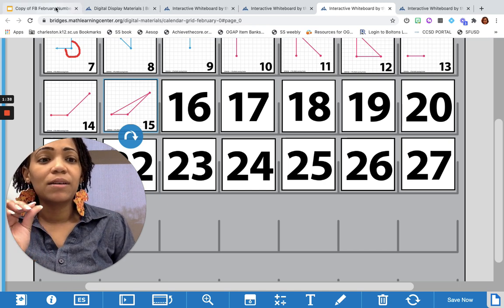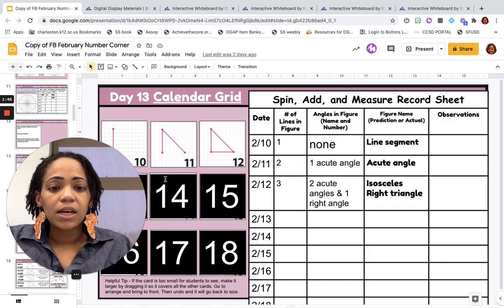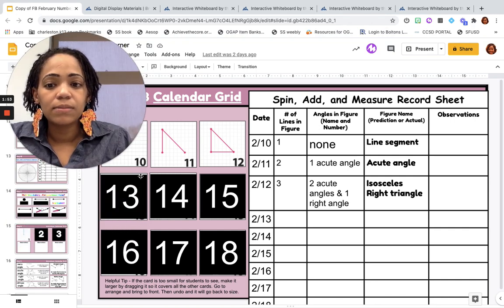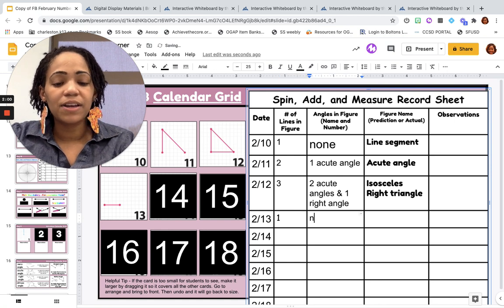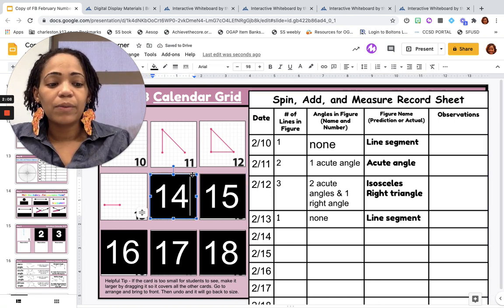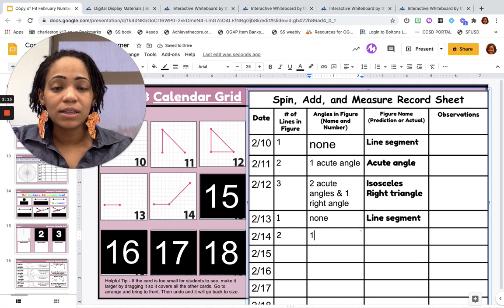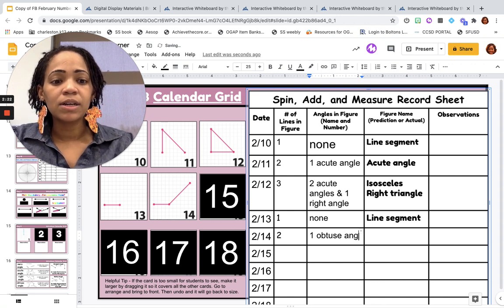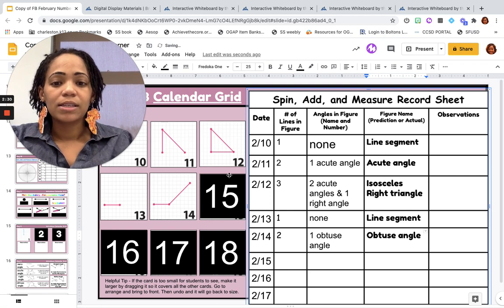Now we are at today's calendar marker, but before we do that, let's update the 13th, 14th, and 15th on our observation chart. The 13th was when we just had one line segment. Number of lines: one. Angles in the figure: none. And we're gonna call this a line segment. Then we had two here and we had one angle. This time, what type of angle is it? It is an obtuse angle. Obtuse means it's bigger than 90 degrees.